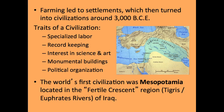Farming leads to settlements, and many of these settlements turn into civilizations around 3,000 BCE. The five traits of a civilization to remember are: specialized labor, record-keeping, interest in science and art, monumental buildings, and some kind of political organization or stratification. The world's first civilization for most historians is Mesopotamia, located along the Fertile Crescent — the Tigris-Euphrates civilization. If you go back to the website to the first week or two of school, you'll see the Persian charts you all created, which would be excellent to review for all these civilizations.